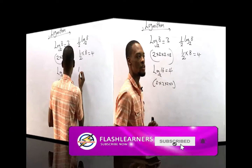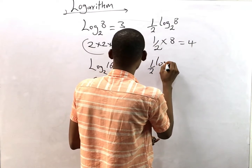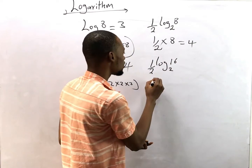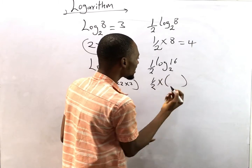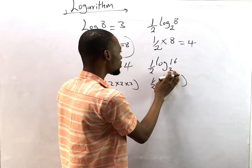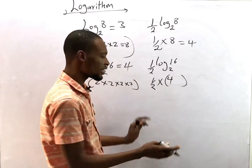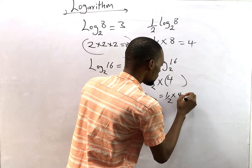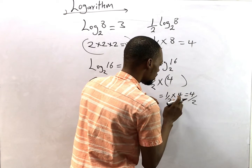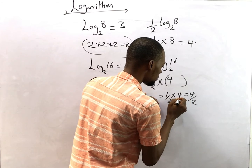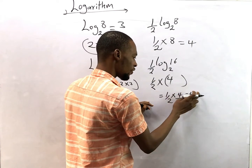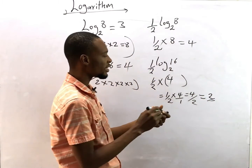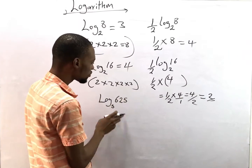Now let's say one over two times log 16 to base 2. What you do is bring out the one over two, then the answer — log 16 to base 2 is 4 as we solved. Multiply: one over two times 4 gives you 4 over 2, which equals 2. So one over two times log 16 base 2 gives you 2.